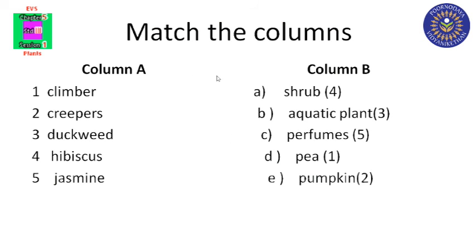Match the columns. Climber — pea. Creepers — pumpkin. Duckweed — aquatic plant. Hibiscus — shrub. Jasmine — perfumes. Write this in the textbook.